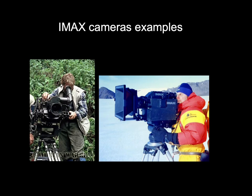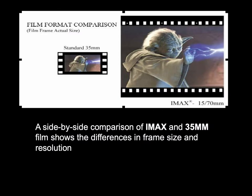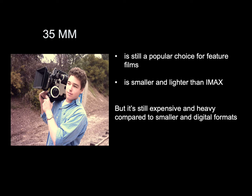Here are two examples of different IMAX cameras. Take some time to look at this side-by-side comparison of an IMAX format — 70mm on the right — and the same image in a 35mm format. It shows the differences in frame size and resolution. 35mm is still the most popular choice for feature films made for theatrical release. It is smaller and lighter than IMAX, but still expensive and heavy compared to smaller and digital formats.